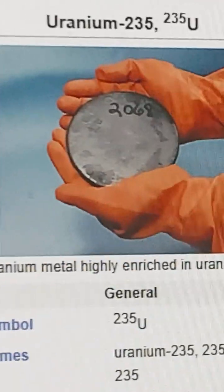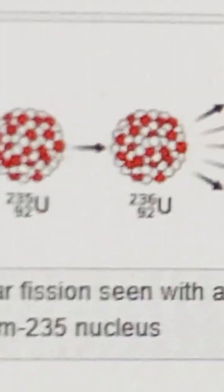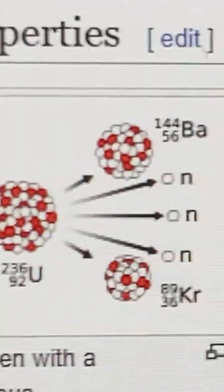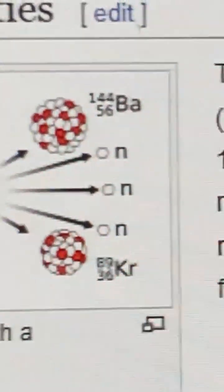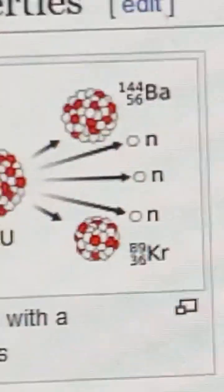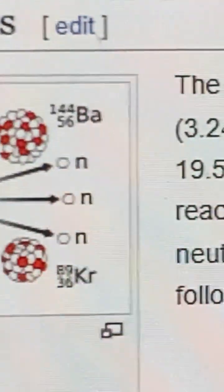That means it can sustain a nuclear chain reaction. When uranium-235 nuclides are bombarded with neutrons, it basically explodes, releasing lighter isotopes and multiple neutrons, which can bombard other uranium-235 nuclides, causing a chain reaction to occur.